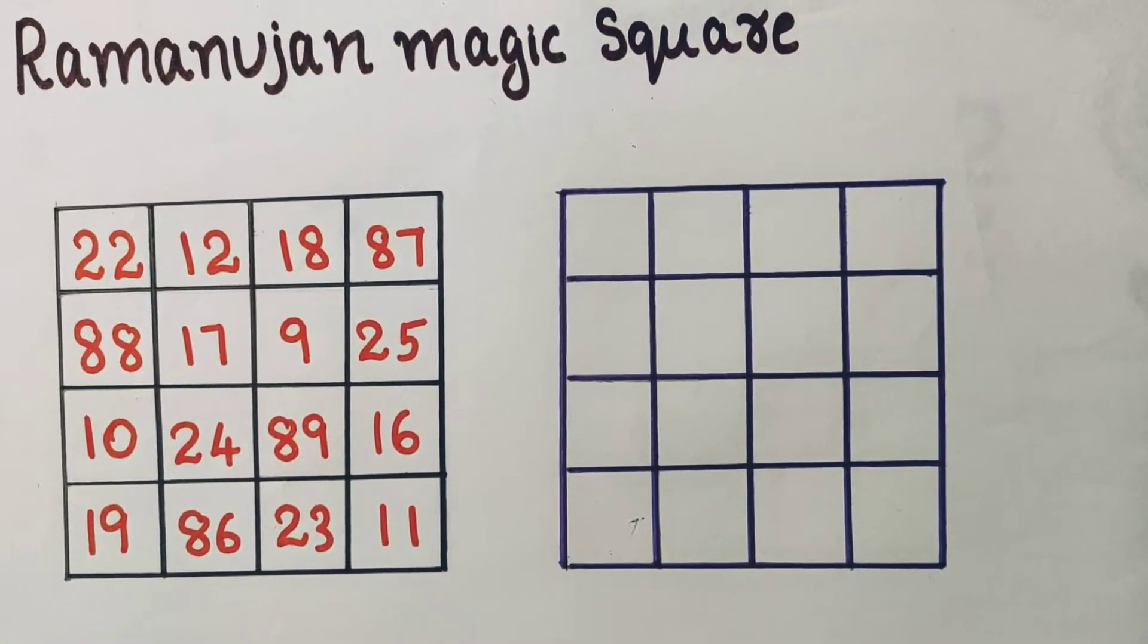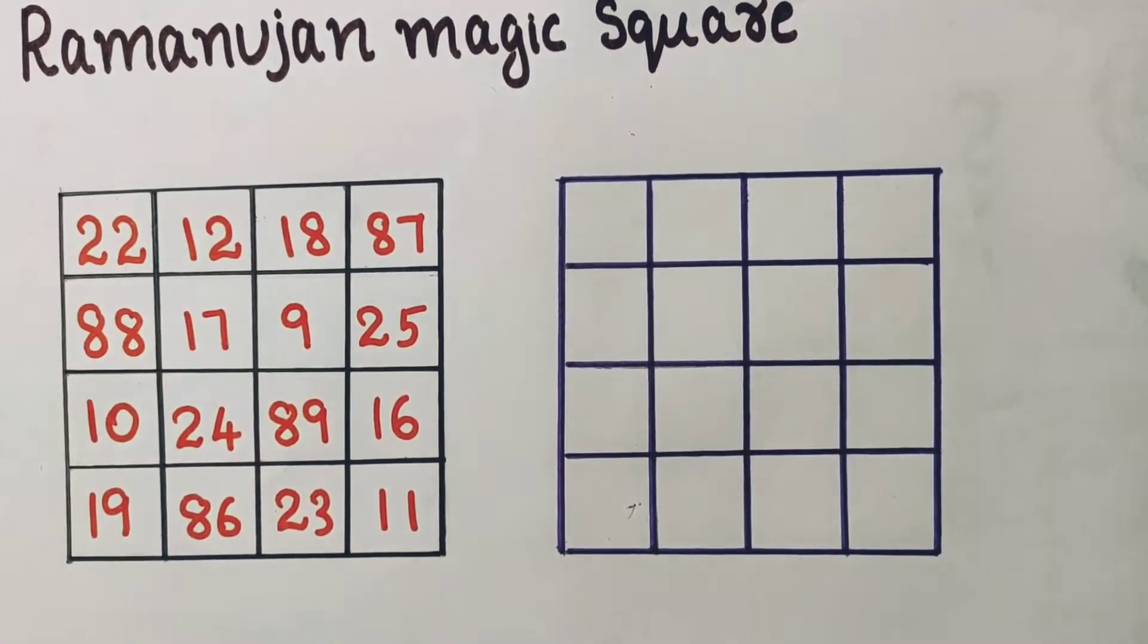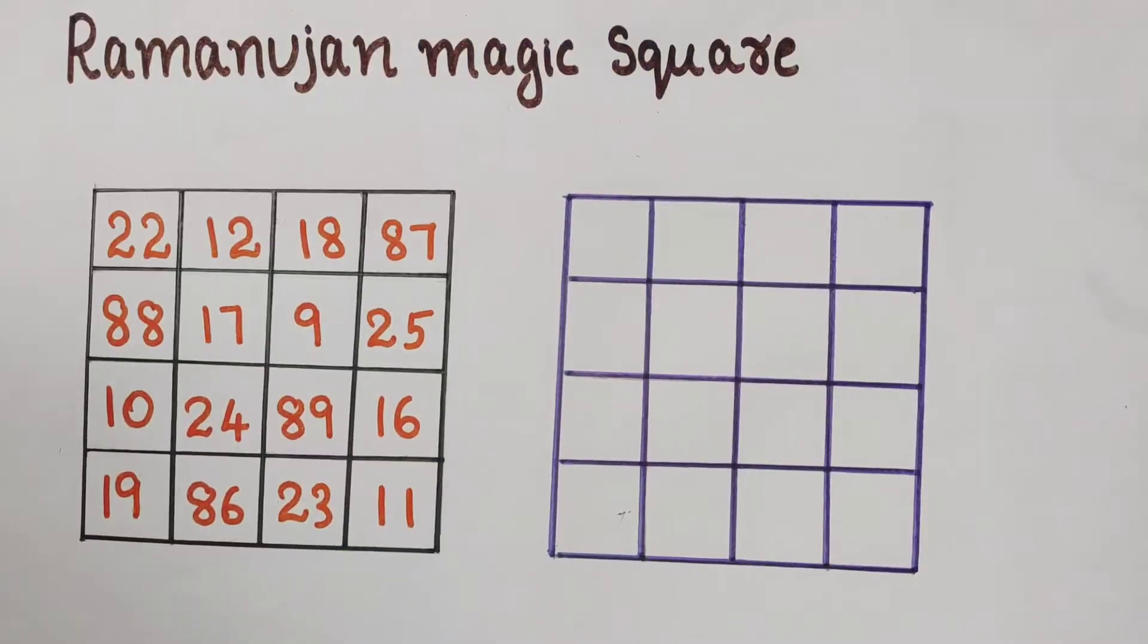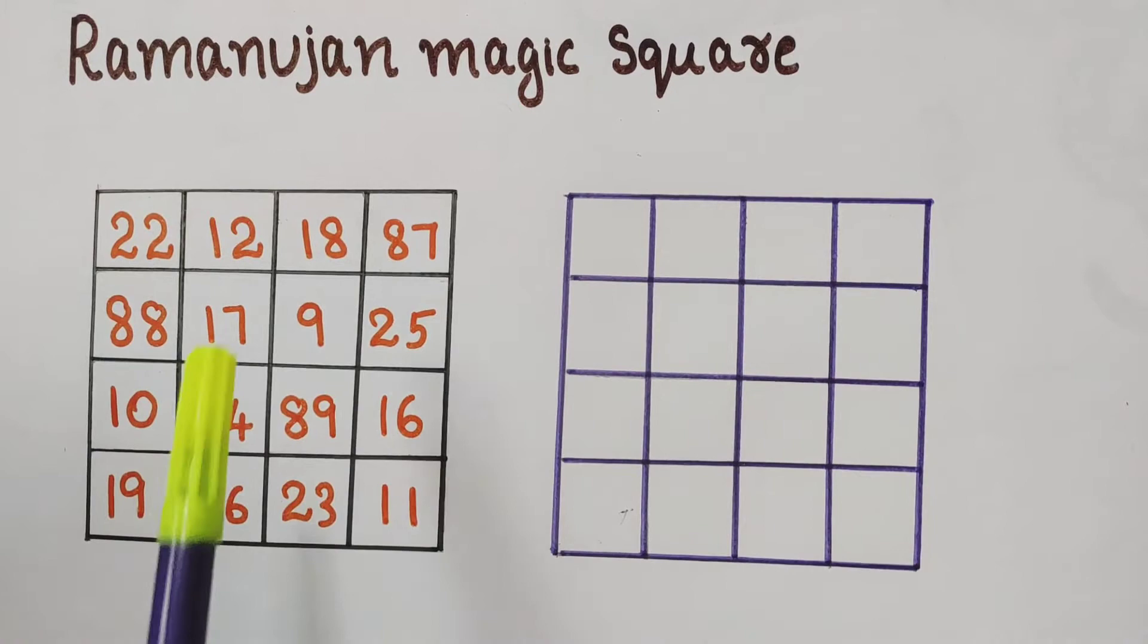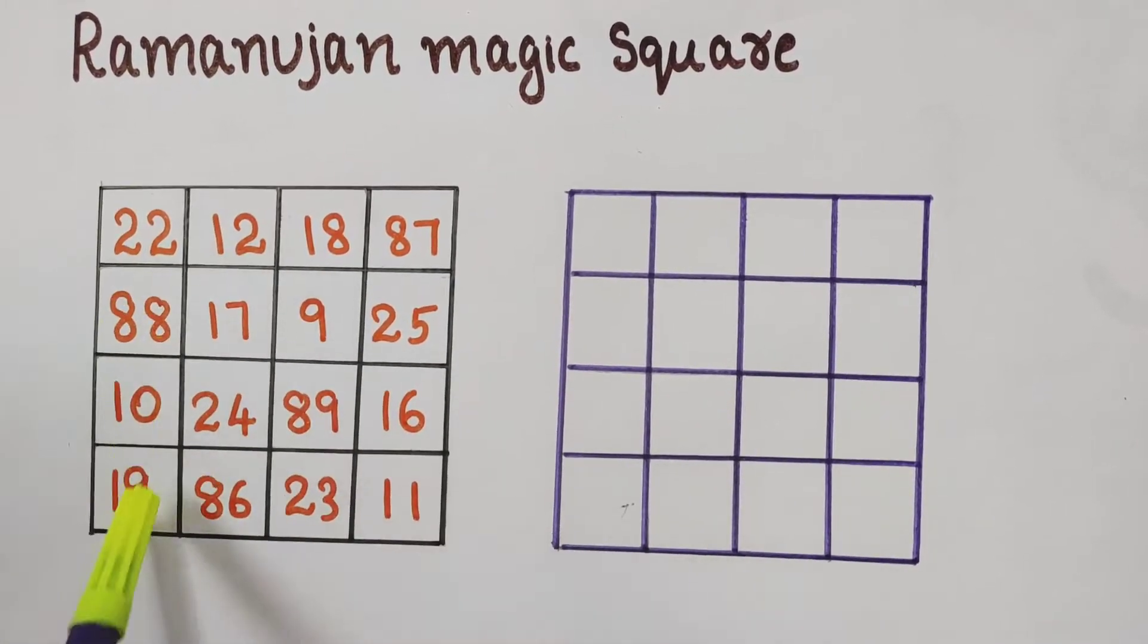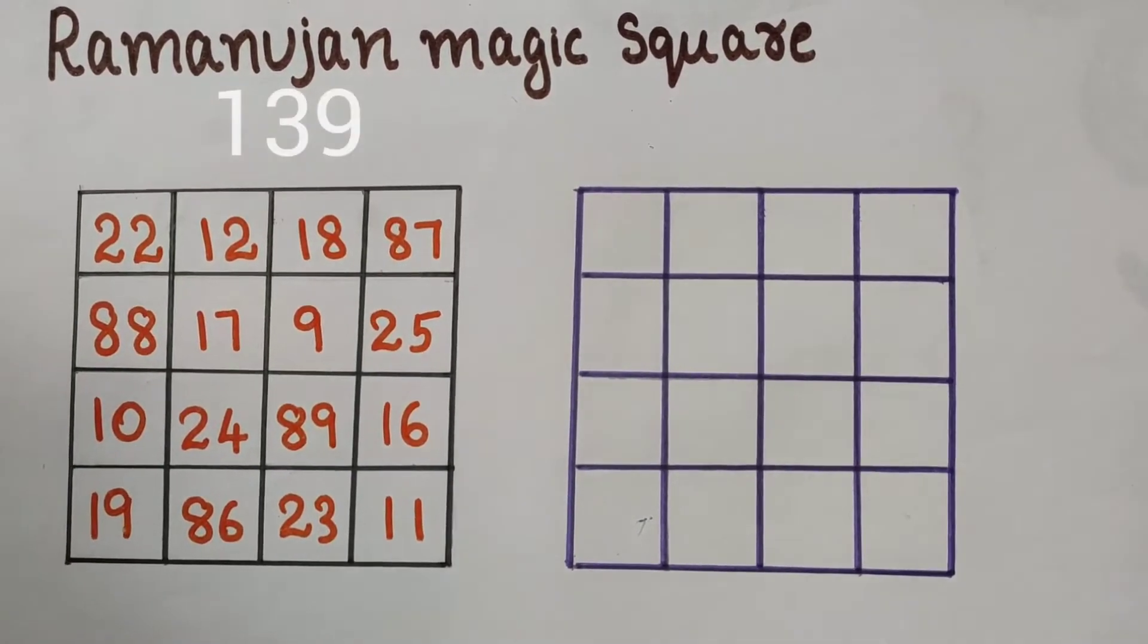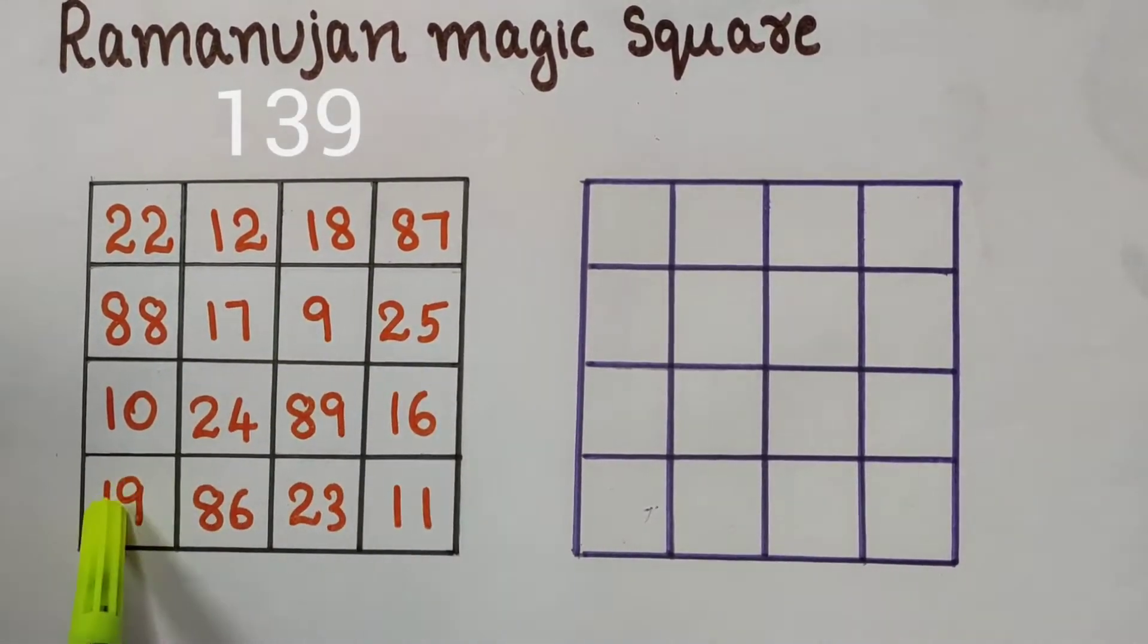This magic square is formed by great mathematician of India, Srinivasa Ramanujan. Let's see what is so great in it. Like any other magic square, sum of numbers of any row and sum of numbers of any column is same. Here it is 139. Sum of numbers of both diagonals are 139.